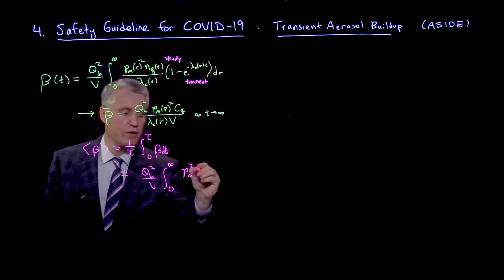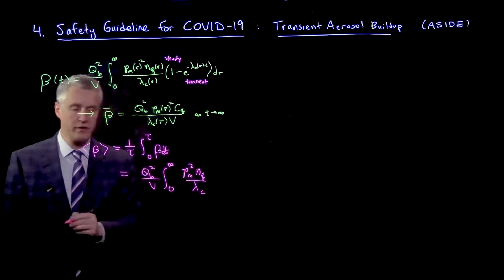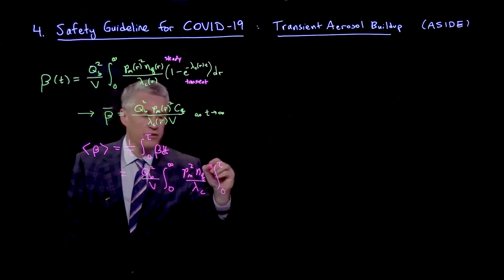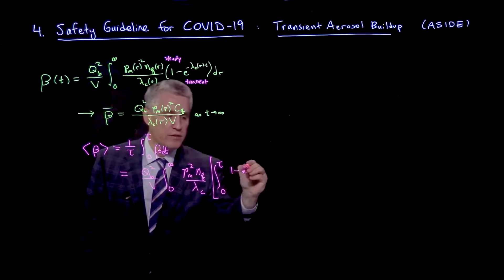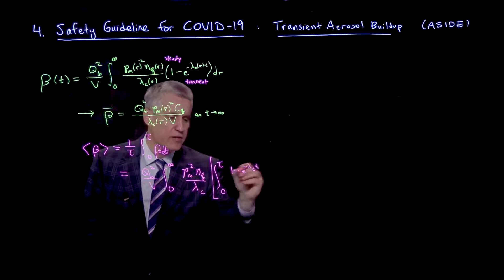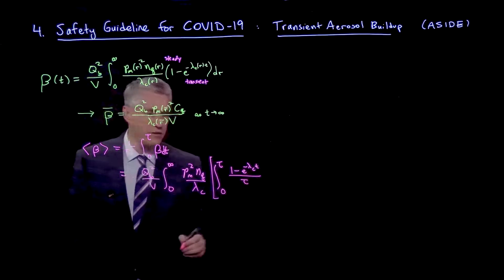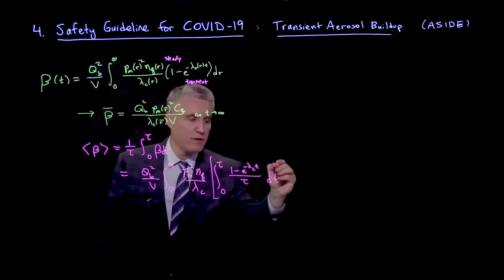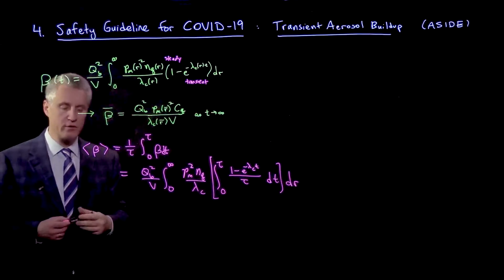Of pm squared nq over lambda c, keeping in mind all those factors depend on r, times now an integral from 0 to tau, and I'll put this in brackets, of 1 minus e to the minus lambda c, which depends on r, times t, divided by tau dt, and then dr. So I'm switching the order of integration, where we're going to do the time integral first.